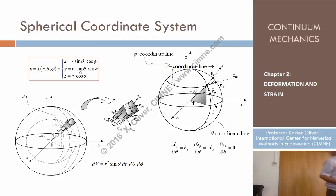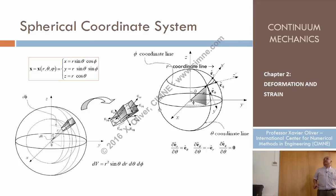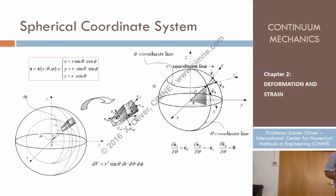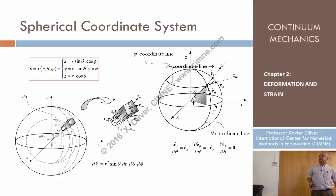What are the coordinate lines in the spherical system? If I keep theta and phi constant and vary r, I obtain the r coordinate line. If I keep r and theta constant and vary phi, I obtain a line — on the Earth's surface, that would be called a parallel. And if I keep phi and r constant and vary theta, I obtain a circumference called a meridian. That is why this system is used in geographic contexts, since the Earth is easily described by it.